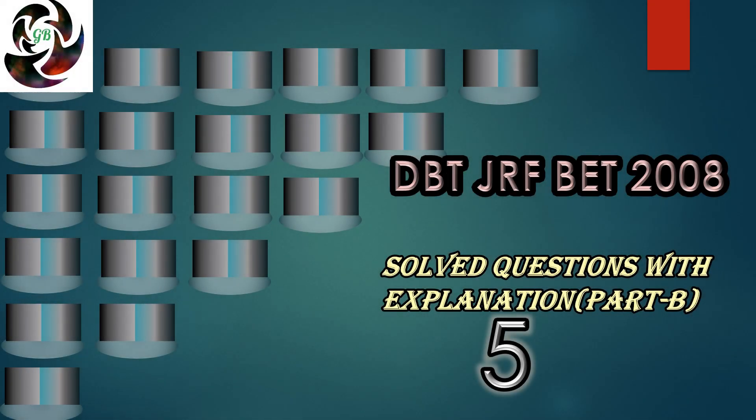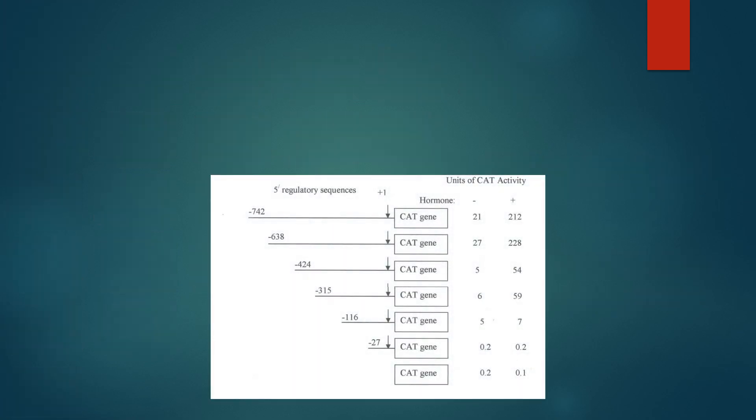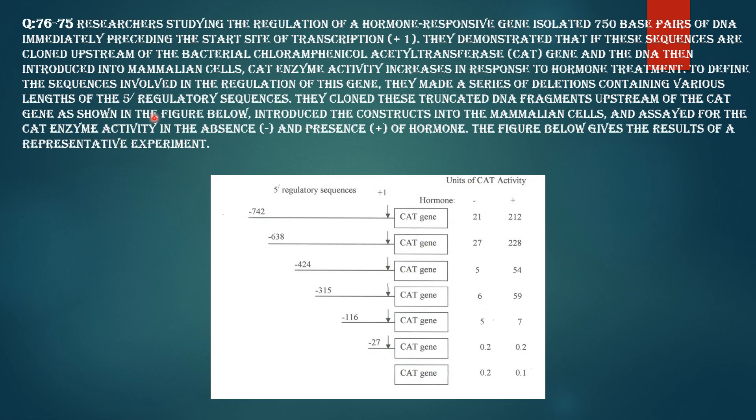This video is going to be about GPT-015-2008 question 2 Part B session 5. Question 76-75: researchers studying the regulation of hormone response of gene isolated 750 base pairs of DNA.